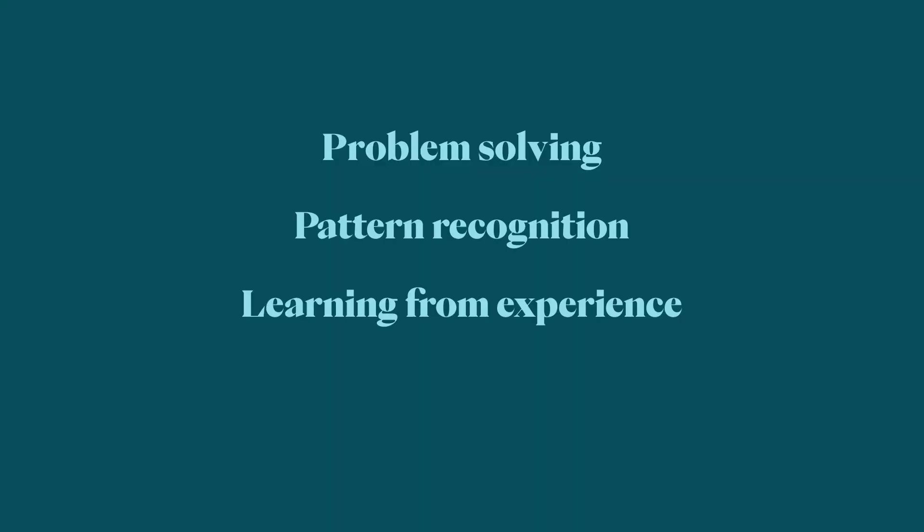So we understand what machine learning is and we understand what deep learning is. So what the heck is AI? Aside from being a thing that CEOs can't shut up about. Well, it's actually a lot less specific than the two terms we talked about before. AI can technically be defined as any system that can perform tasks that would typically require human intelligence. This includes problem solving, pattern recognition, learning from experience, making decisions, and understanding natural language. This broad definition means that AI isn't just machine learning or deep learning — it's any technology that mimics human cognitive functions.